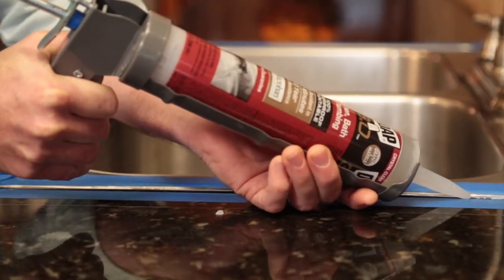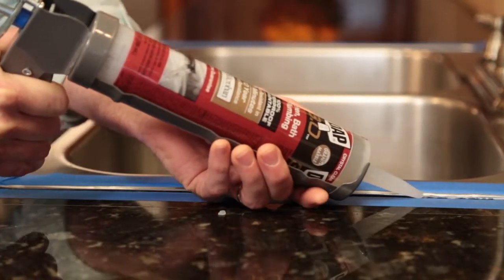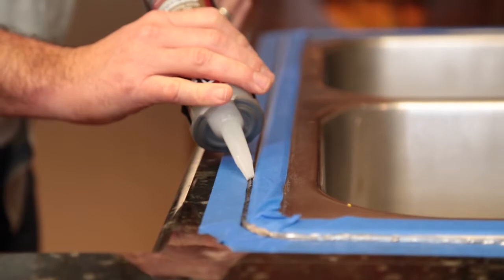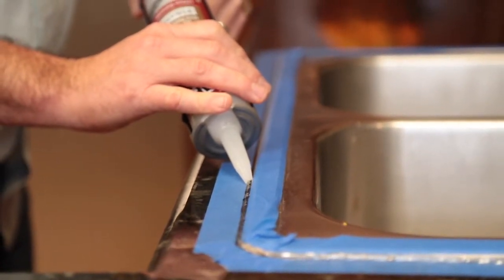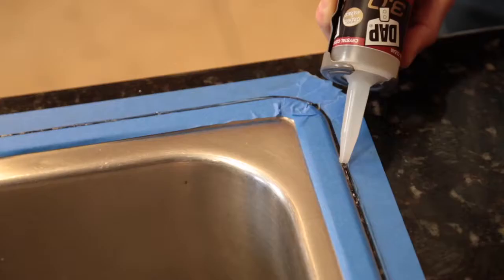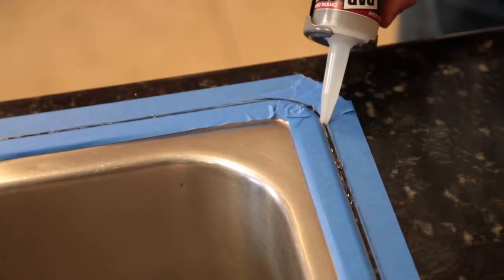Hold the caulk gun at a 45-degree angle to the surface and gently squeeze the trigger with steady pressure to apply an even bead of sealant in the seam. If you keep the caulk gun moving steadily, you'll get a more consistent bead. Work your way around the sink.